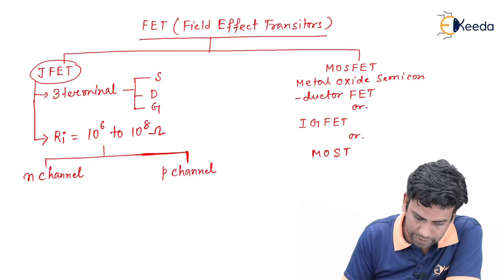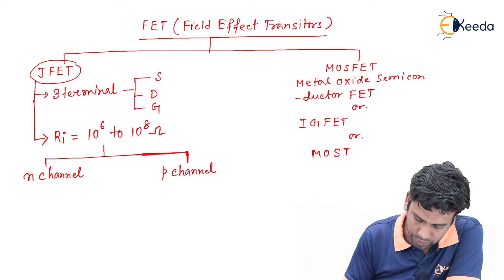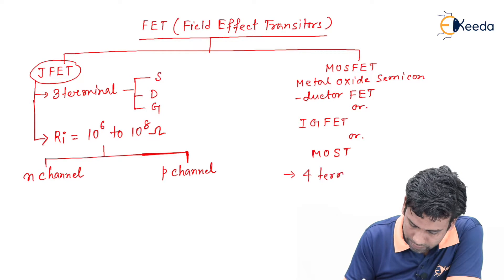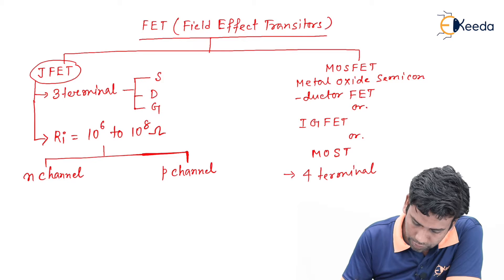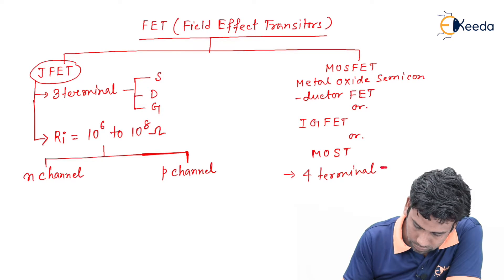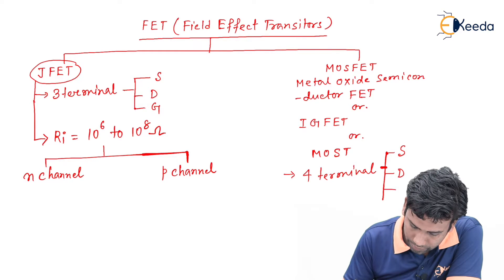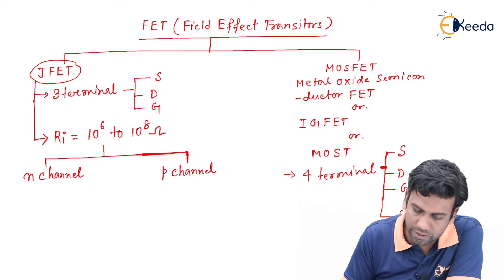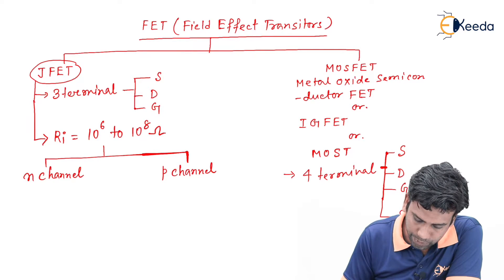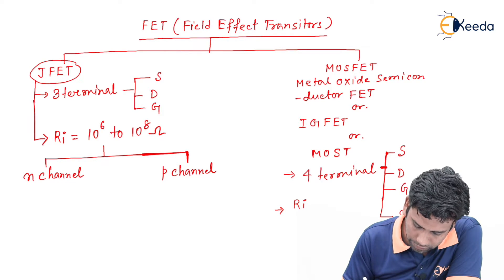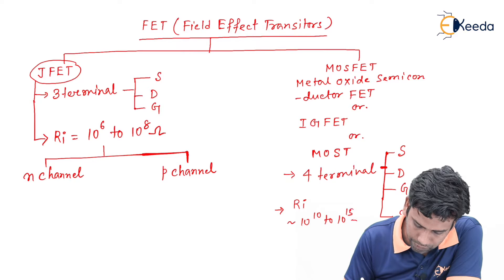Similarly, a MOSFET can also be classified into two groups. MOSFET is a four terminal device and the four terminals are source, drain, gate, and substrate. The input impedance of the metal oxide semiconductor FET is of the order of 10 to the power 10 to 10 to the power 15 ohm.